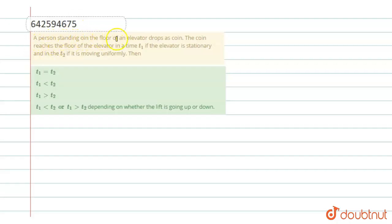A person standing on the floor of an elevator drops a coin. The coin reaches the floor of the elevator in time t1 if the elevator is stationary, and in time t2 if it is moving uniformly. Then: t1 equals t2, t1 is less than t2, t1 is greater than t2, or t1 is less than or greater than t2 depending on whether the lift is going up or down.